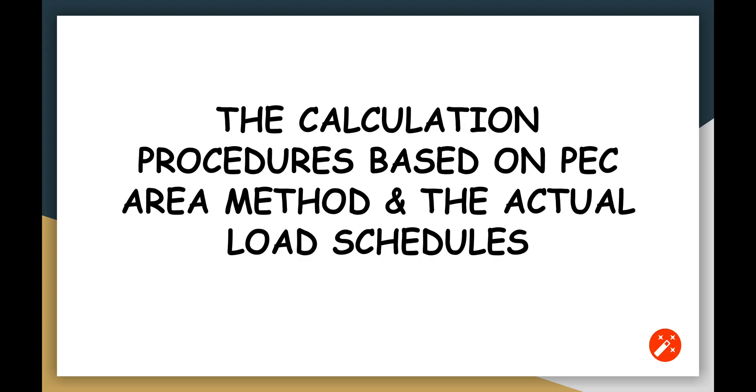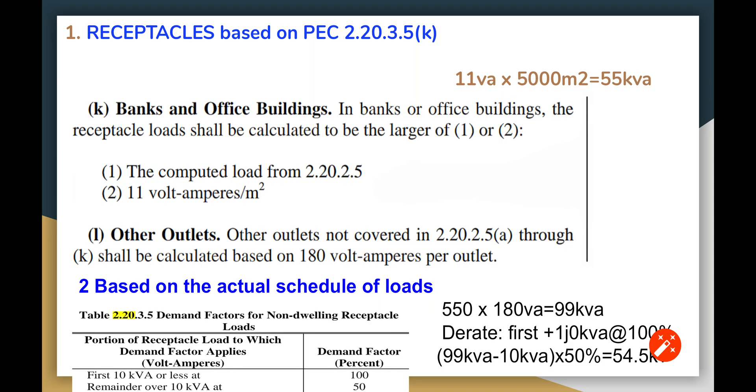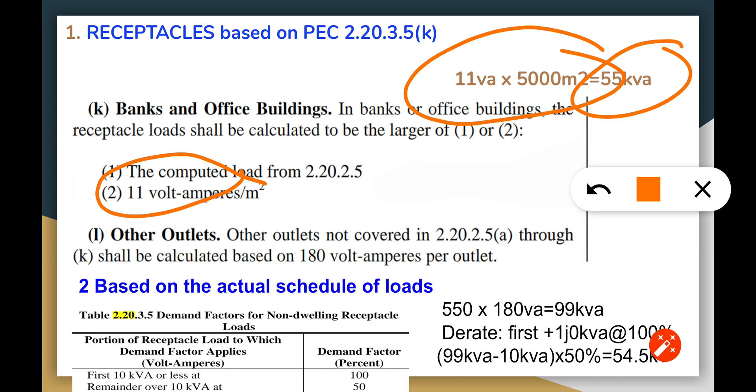Let's go for the calculation procedures. First is the receptacles, and based on the PEC we have 11 volt amperes per meter squared, and we're going to multiply that by the square area and we're going to get 55 kVA. If you're going to use the schedule loads, we have 550 receptacles times 180 VA, and that VA is going to give us 99 kVA.